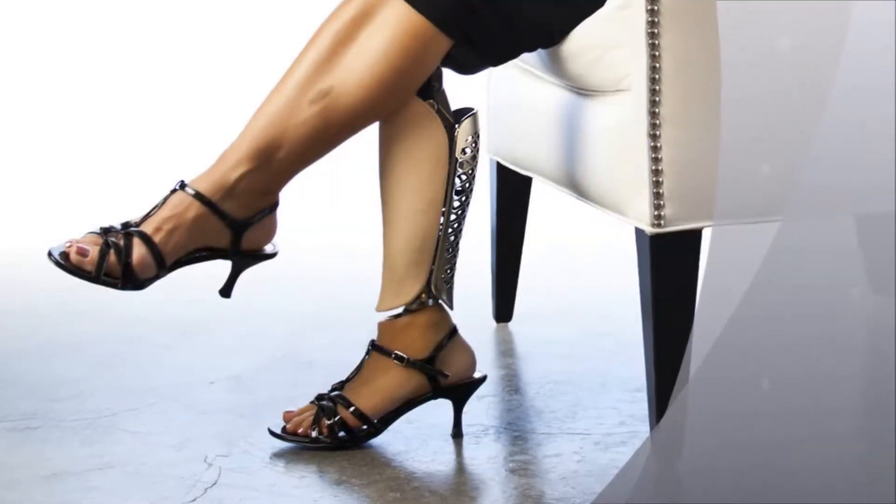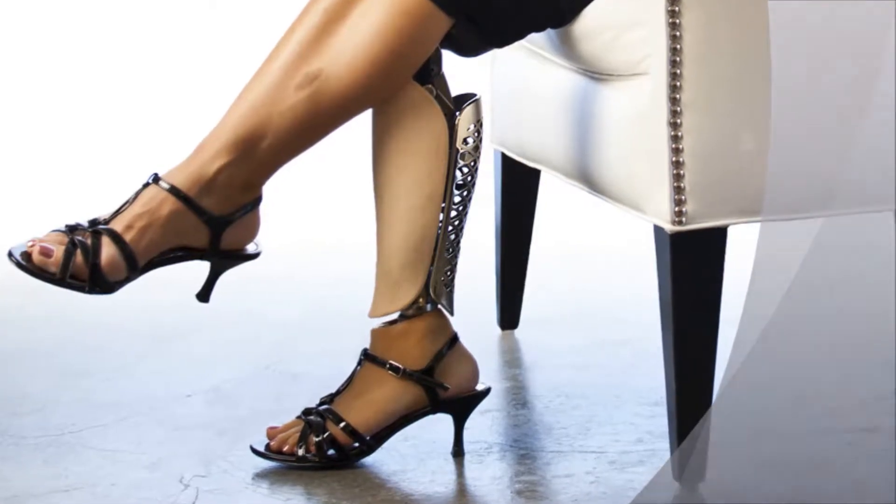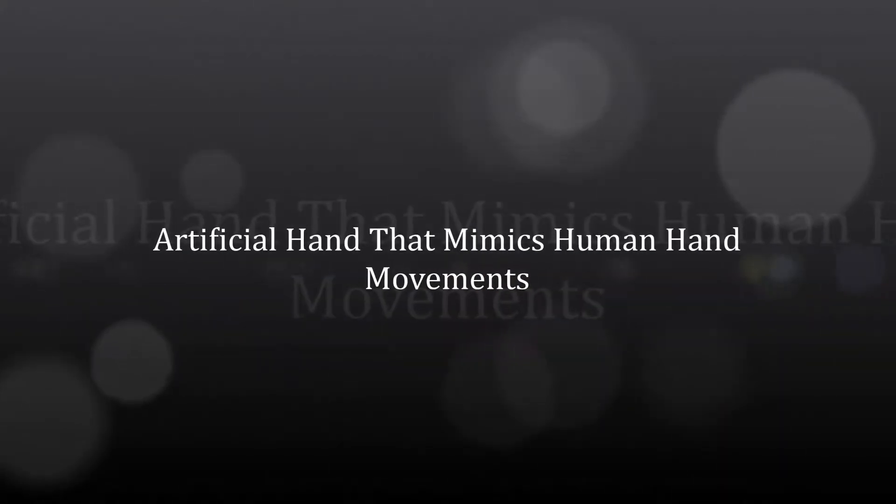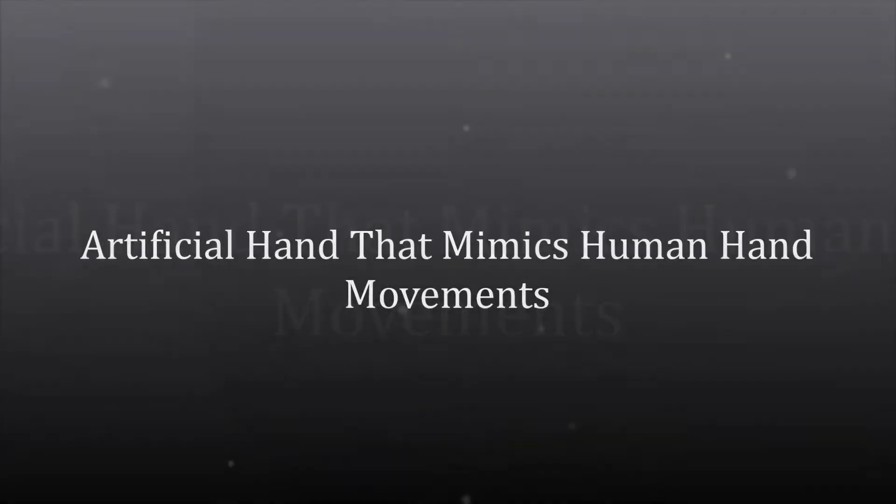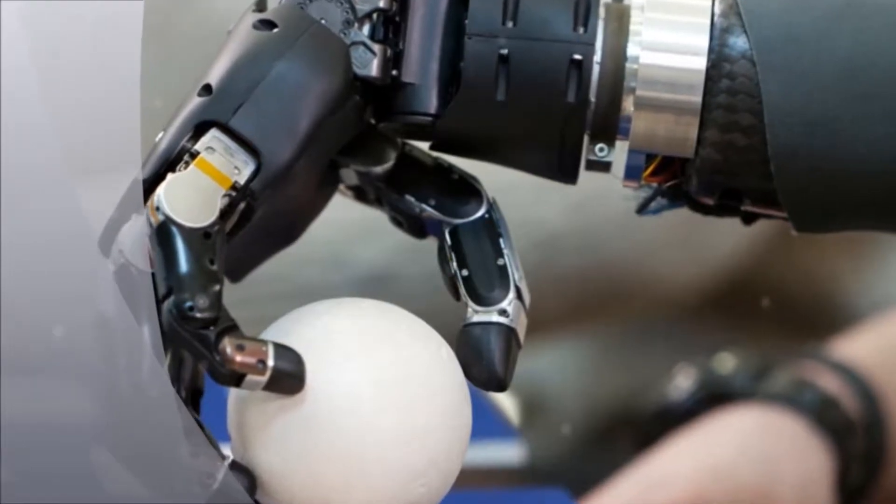London engineers have developed an artificial hand that has sensory properties and can perform extremely precise movements. The research team led by Professor Stefan C. Leck from Sarland University is using a new technology based on the shape memory properties of nickel-titanium alloy.